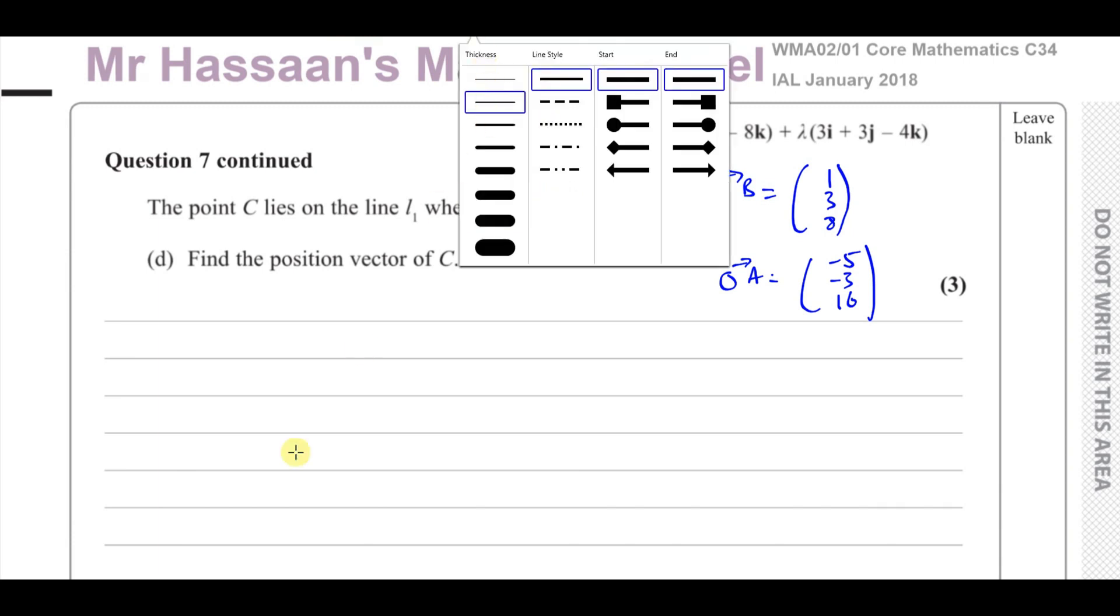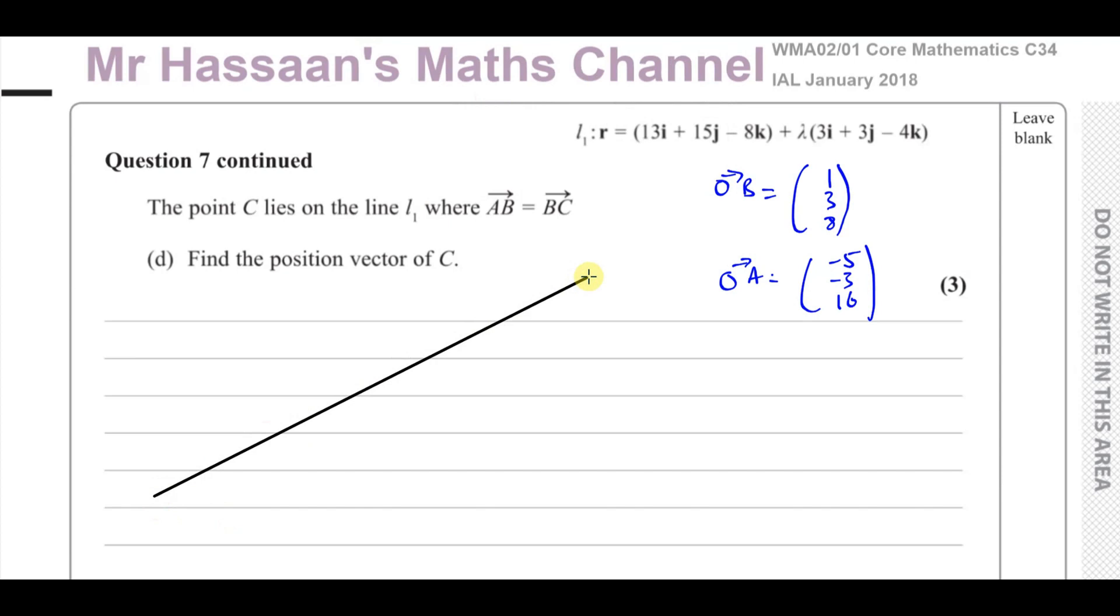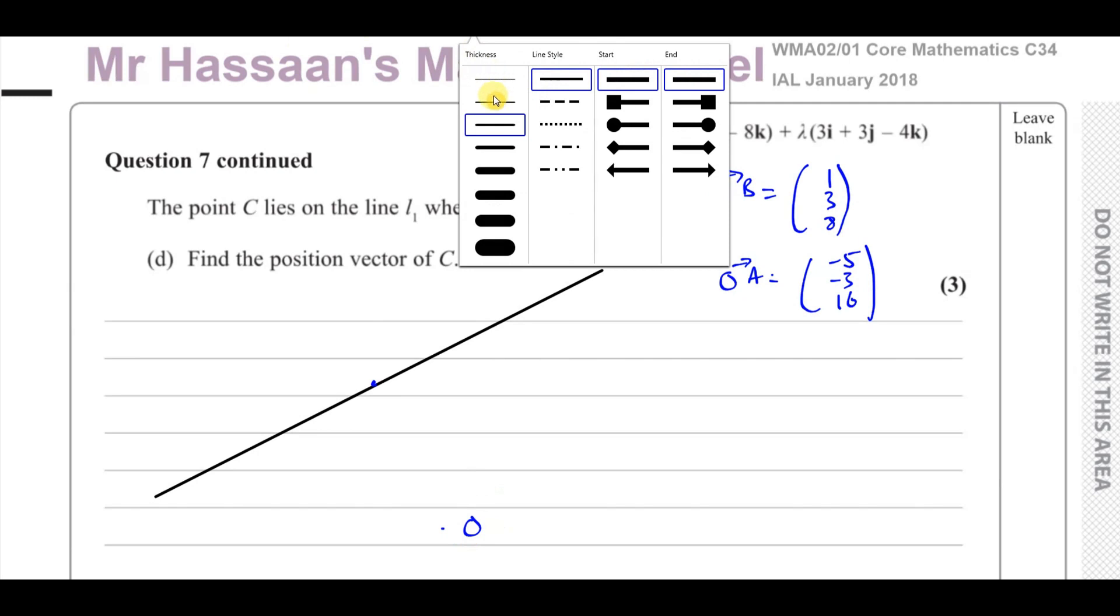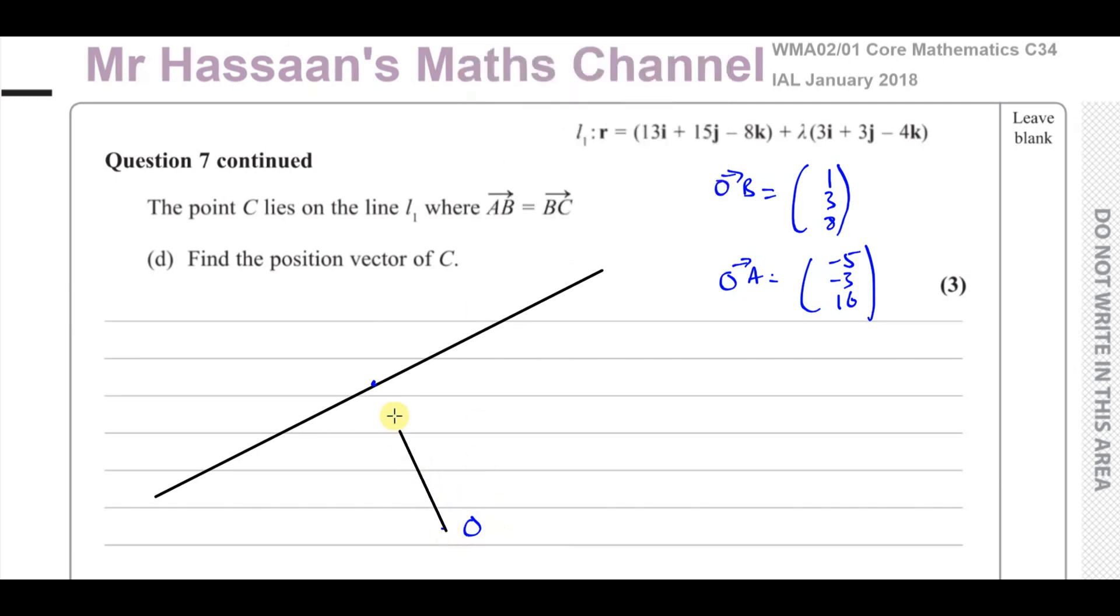So let's say we have our line 1 here. Now we know the position vector of B. Let's say we have O over here. We know the position vector of B, that's where line 1 and line 2 intersect. Say that's O and that's point B. We know the vector O to B. We had to find it in the first part, which is 1, 3, 8.